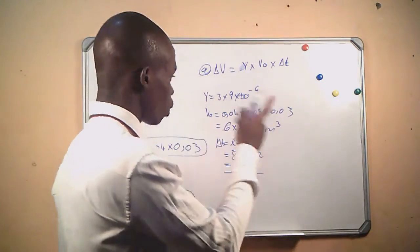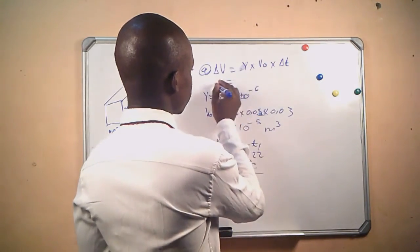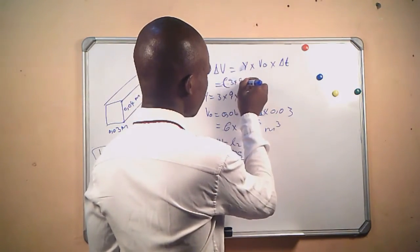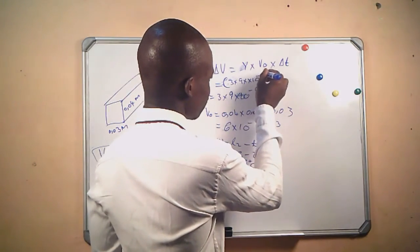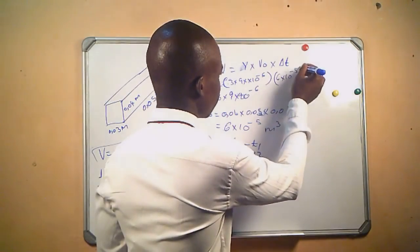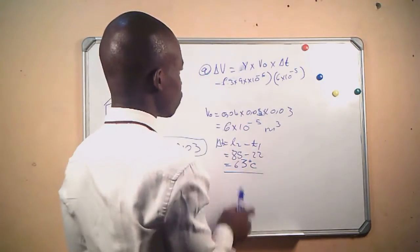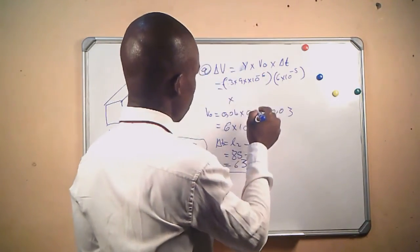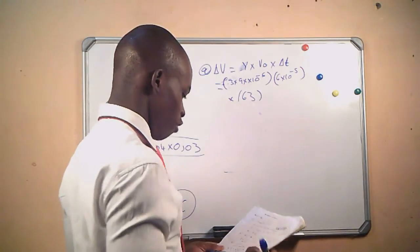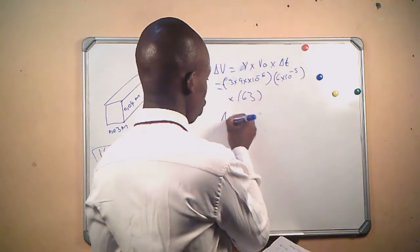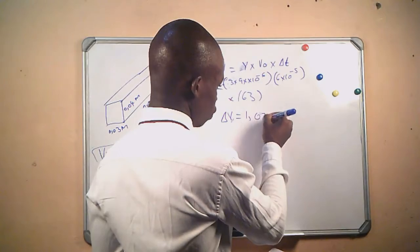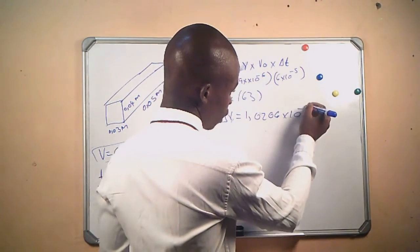We substitute into the formula: 3 times 9 times 10 to the power negative 6, times 6 times 10 to the power negative 5, times 63. This gives us a change in volume of 1.0206 times 10 to the power negative 7 cubic meters.